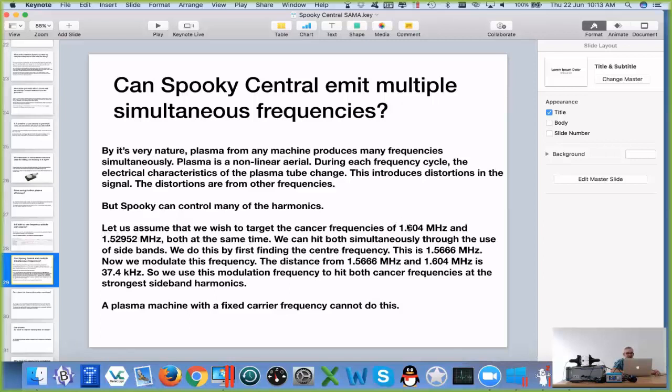The example I gave here is quite an important one. There's two known frequencies for cancer: the BX of 1.604 MHz and the BY of 1.52952 MHz. We can actually hit both of those at the same time. We do this through sidebands.